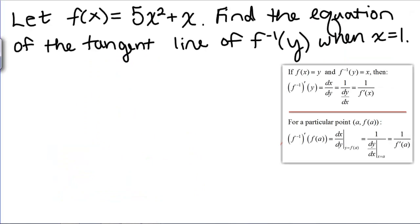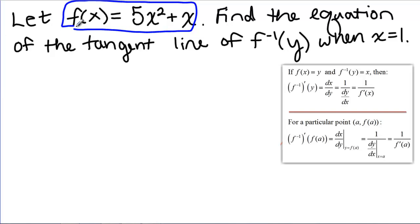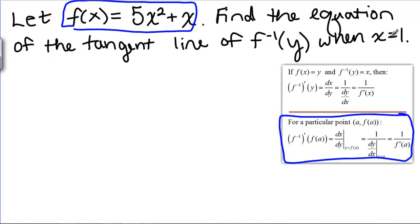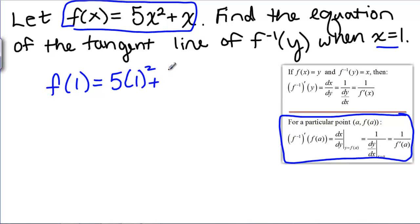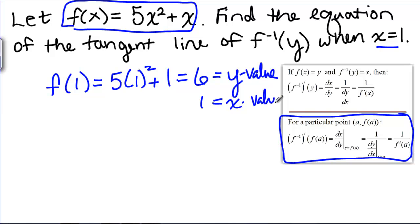Since E to the Y is X, the derivative of natural log of X is 1 over X, which is exactly what we found in a previous video. Now we're going to use this inverse function theorem to find the equation of the tangent line of F inverse when X is 1, even if we don't solve our actual equation for F inverse. According to this, we want the tangent line when X is 1, so first we need to find Y. F of 1 equals 5 times 1 squared plus 1 equals 6, so our Y value is 6 and our X value is 1. To find a tangent line you need both a slope and a point — we've got our point.